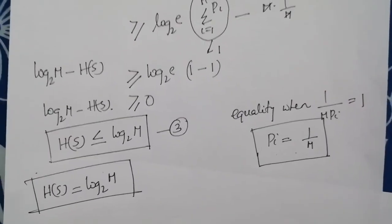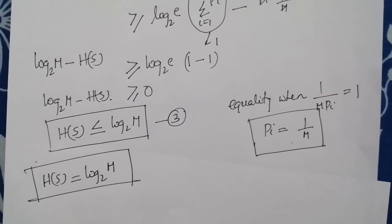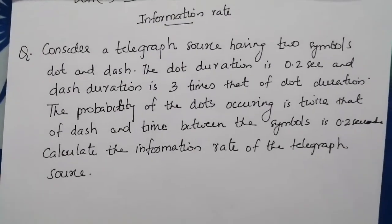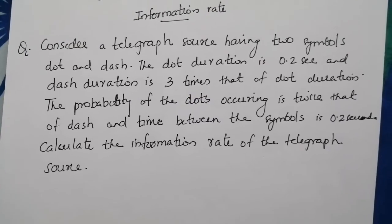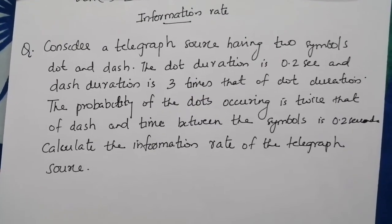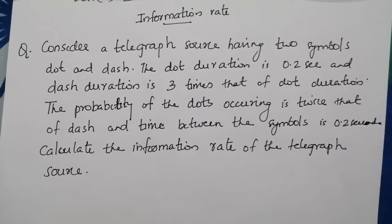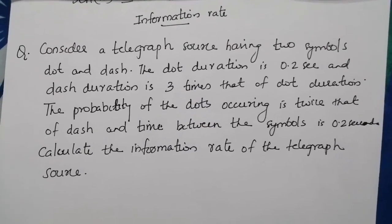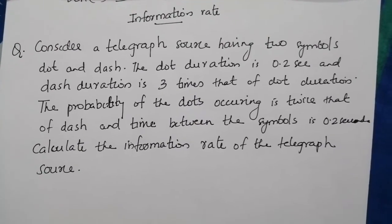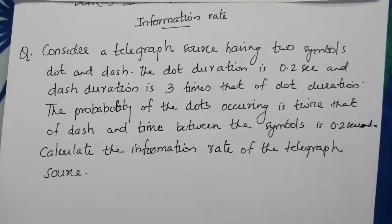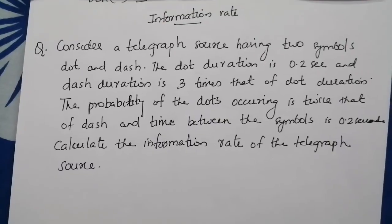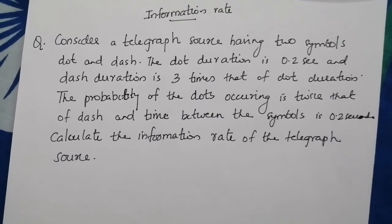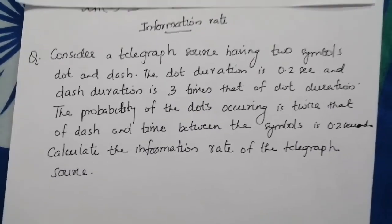Before winding up, please do a homework problem on information rate. Consider a telegraph source having two symbols: dot and dash. The dot duration is 0.2 seconds and the dash duration is three times that of the dot. The probability of a dot occurring is twice that of a dash, and the time between symbols is 0.2 seconds. Calculate the information rate of the telegraph source.